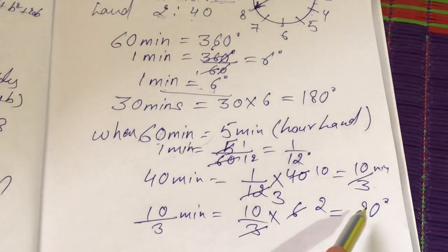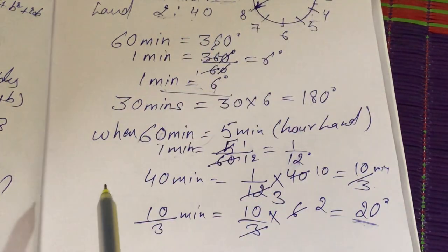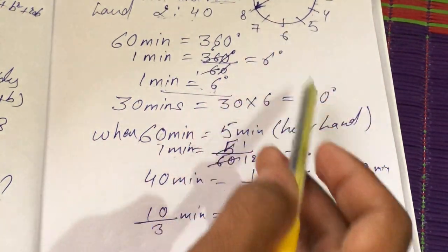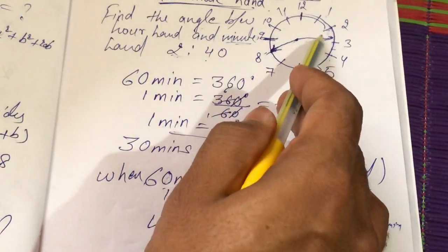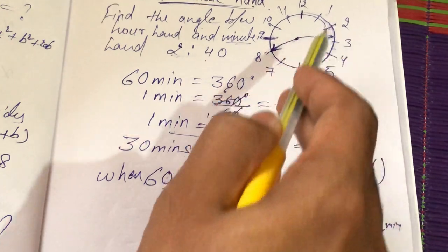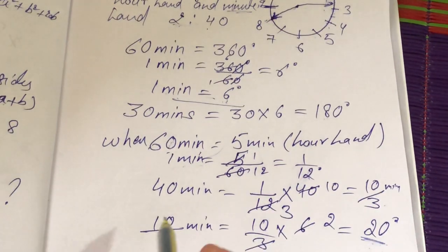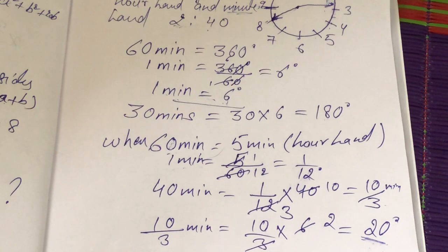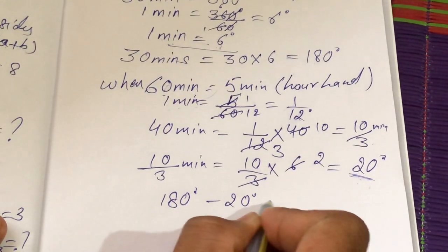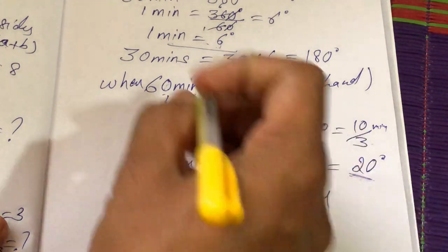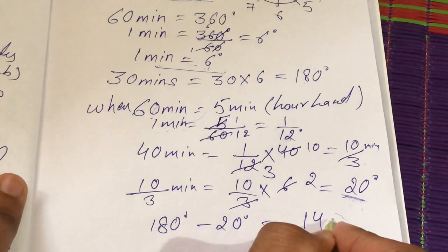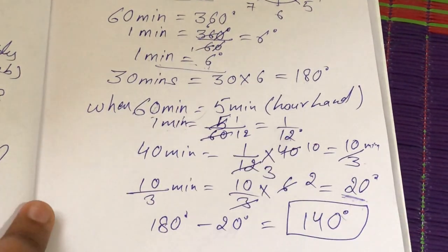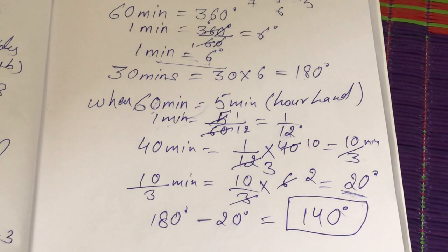So at 2:40, the angle from 2 to 8 is 30 minutes which equals 180 degrees. But the hour hand has moved 20 degrees ahead from 2. So the required angle is 180 minus 20, which equals 160 degrees. That is the angle between the hour hand and minute hand at 2:40.